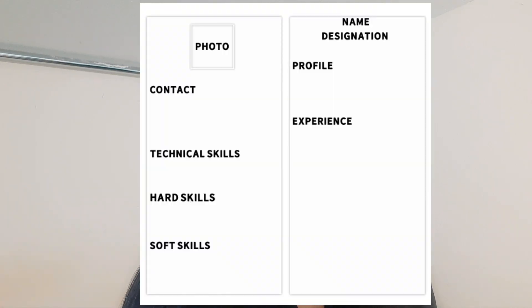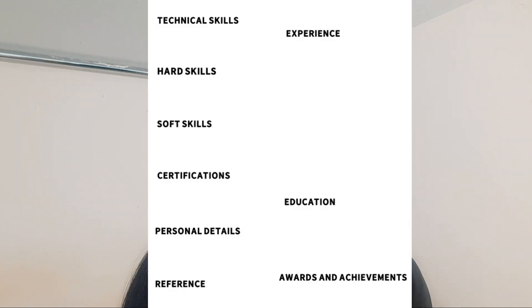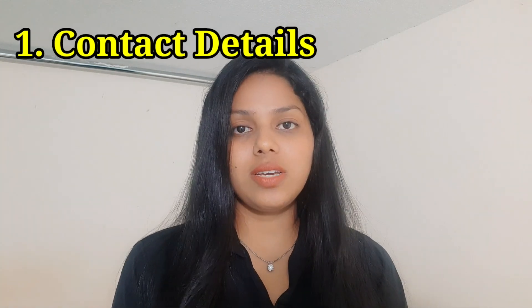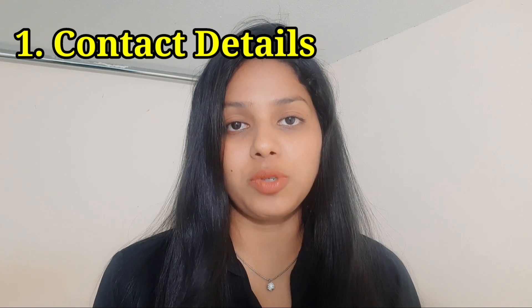What can you include in the reverse chronological format? Contact information, profile, experience, skill section, qualification section, certification section, awards and achievements, your personal details, and last but not least, the reference section. Now you know which template and format to use — let's get into each in detail.